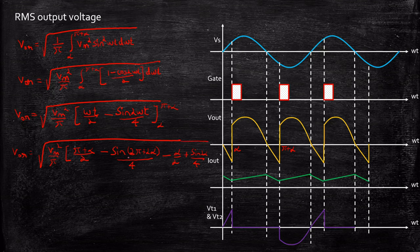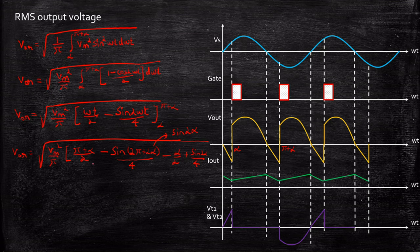After cancellation, we are left with Vout_RMS = Vm / √2. This is the RMS value of the output voltage for an RL load for a single phase fully controlled rectifier.